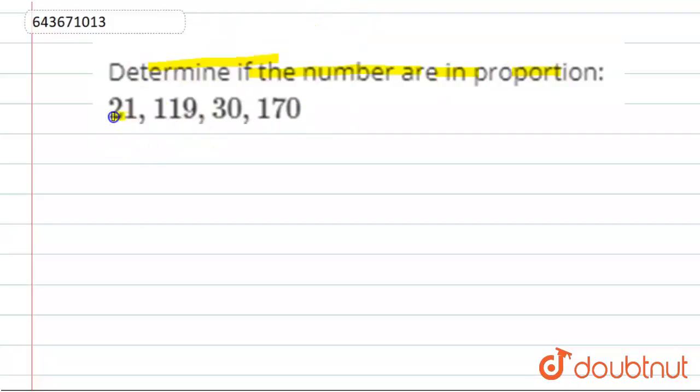numbers are in proportion: 21, 119, 30, and 170.